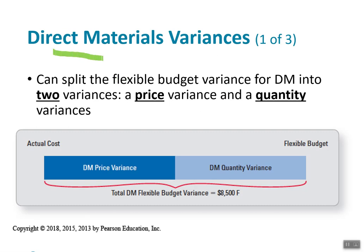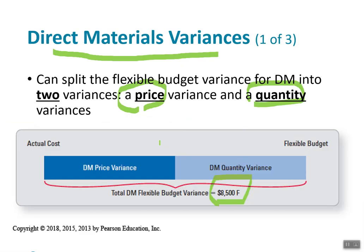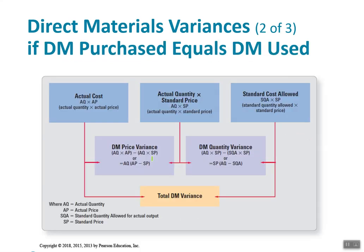There are a number of different variances. For each of the production components — direct material, direct labor, and factory overhead — we are going to have a price variance and a quantity variance. Those two combined will show that we had $8,500 favorable for the flexible budget on direct materials. Now what we want to do is break it up into the price variance and the quantity variance. We want to know: is this favorable variance coming from the fact that we got a lower price, or were we more efficient with how we used our materials?